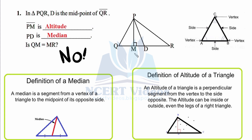Now let's solve the blanks. PM is drawn at 90 degrees from vertex P toward the opposite side, so PM is an altitude. PD connects point P to D, which is the midpoint of side QR — meaning QD equals DR — and that midpoint is joined to the opposite vertex P, so PD is a median.